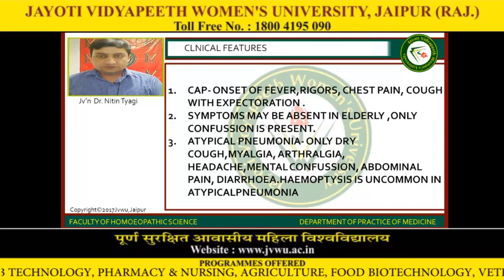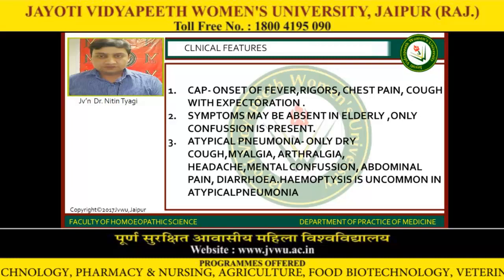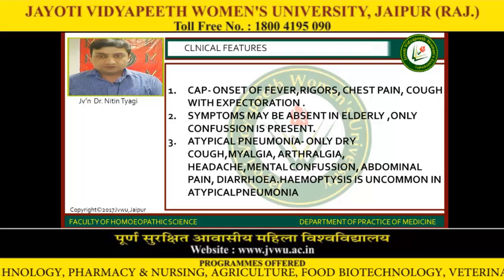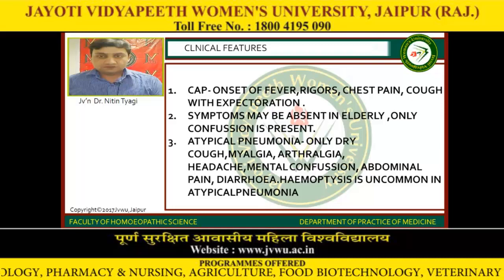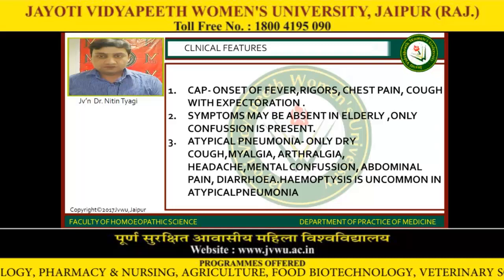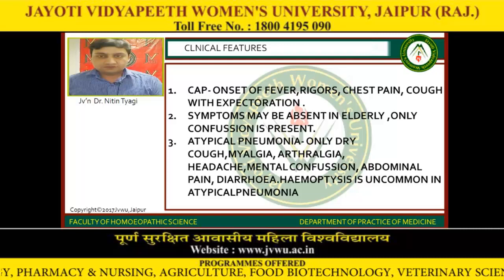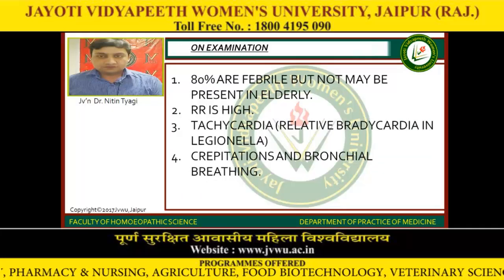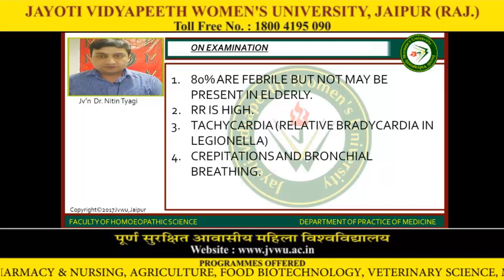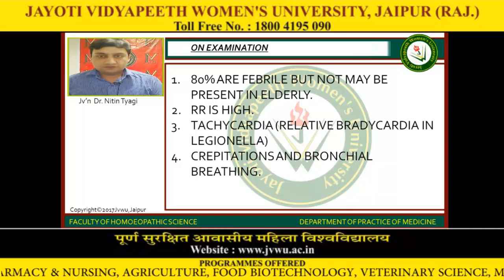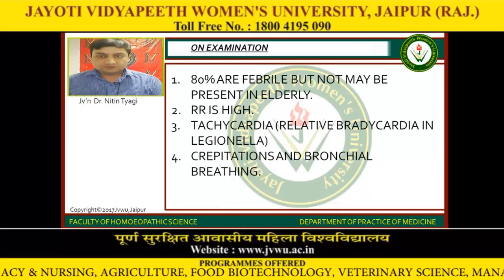Clinical features of pneumonia. In CAP: onset of fever, rigors, chest pain, cough with expectoration. Symptoms may be absent in the elderly — only confusion may be present. Atypical pneumonia presents with dry cough, myalgia, arthralgia, headache, and mental confusion. Abdominal pain, diarrhea, and hemoptysis are uncommon in atypical pneumonia. On examination, 80% are febrile, though fever may not be present in the elderly. Respiratory rate is high. Tachycardia is present, with relative bradycardia in Legionella. Crepitations and bronchial breathing are present.